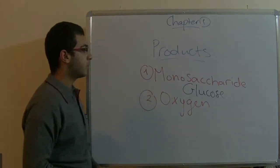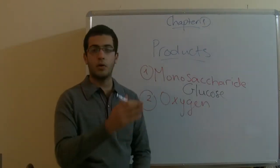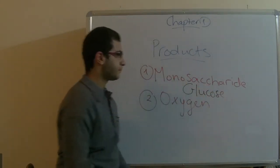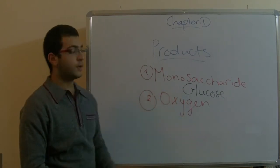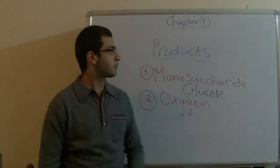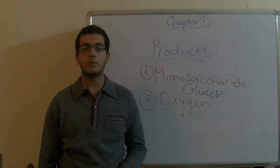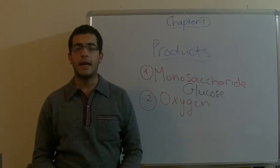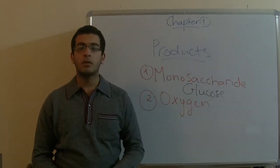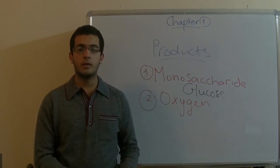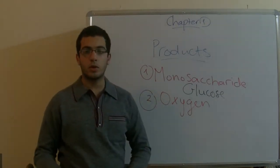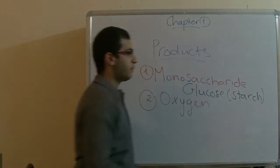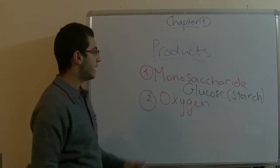It's called monosaccharide because when glucose is broken down, it gives only one molecule. This monosaccharide is very important in the photosynthesis products because it may be used by the plant to be burnt and produce energy, or it may be used to produce proteins, and also it may be stored in the form of starch for the purpose of storage. So it has three uses.